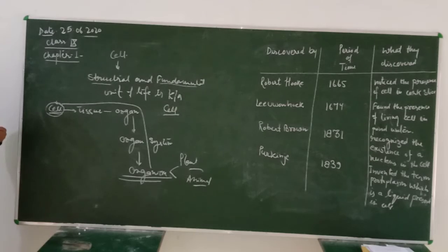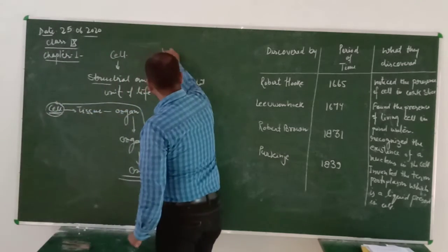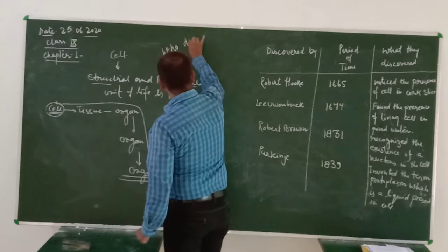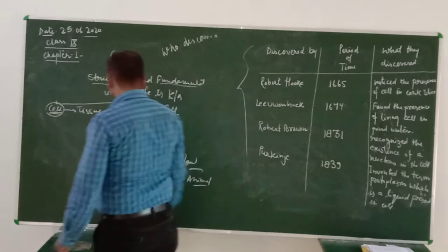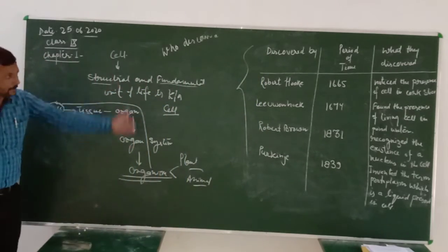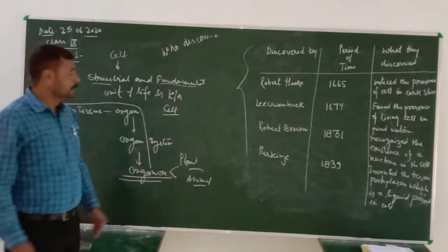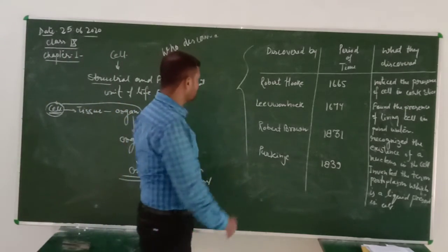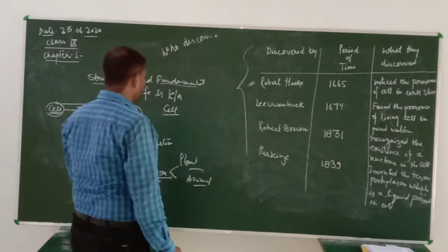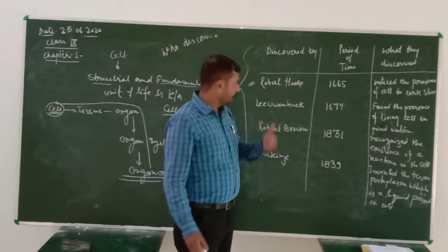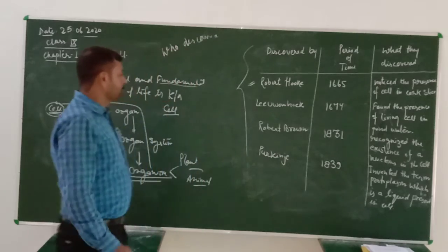Now let me discuss who discovered cells. Cell was discovered by scientists. The first one is known as Robert Hooke. I will tell you about the scientific contribution regarding cell discovery. Robert Hooke is one of those who will be seen before.